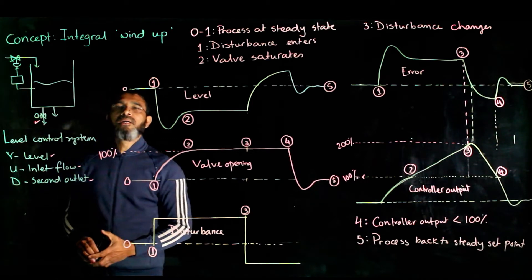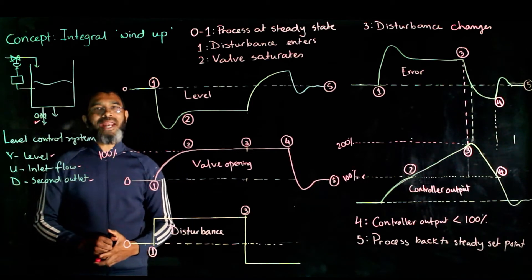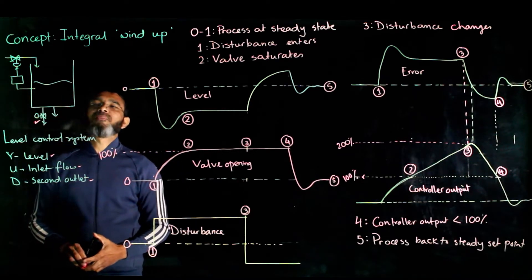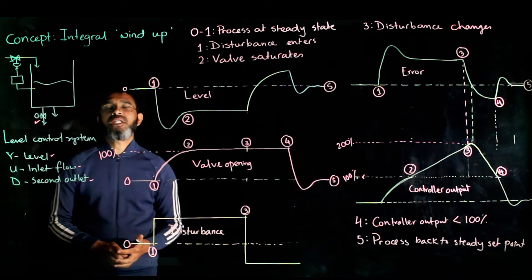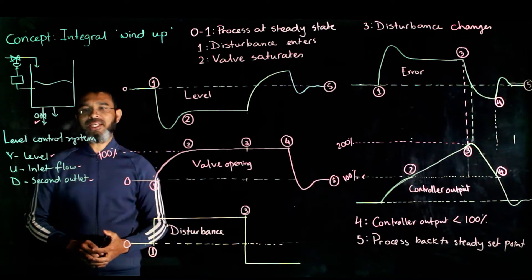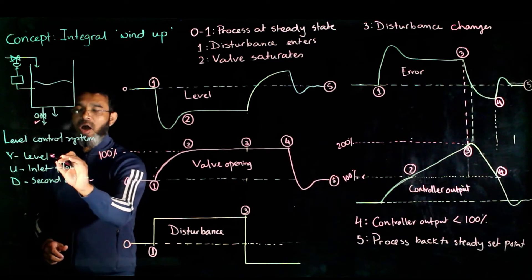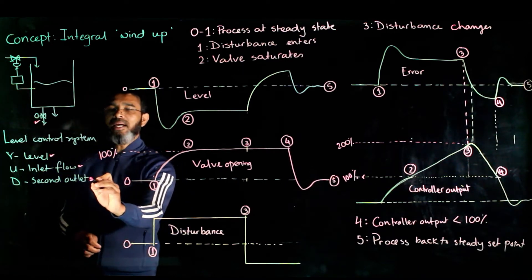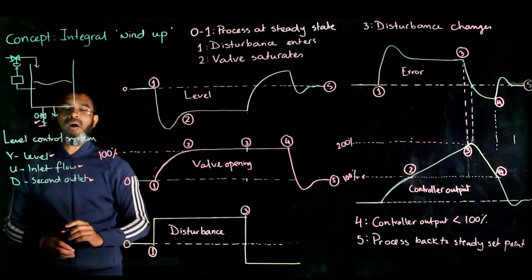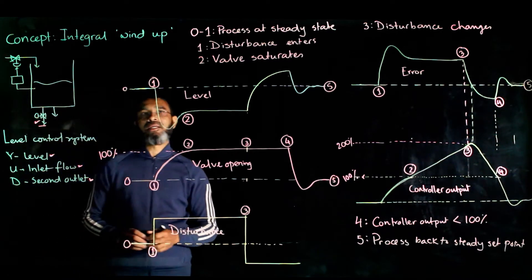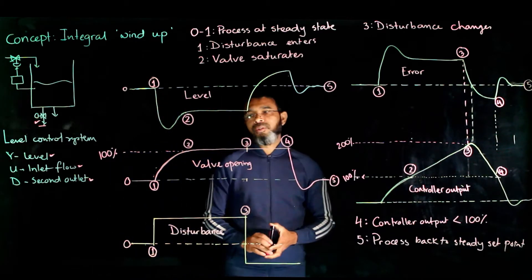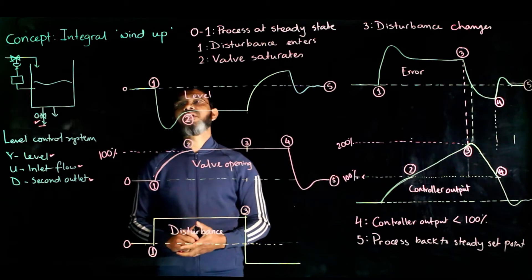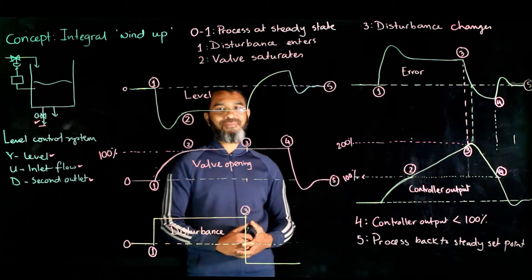In this session we talk about the integral windup issue. To understand the problem, let's take a look at a simple tank example where the objective is to maintain the level of liquid in the tank by manipulating the inlet flow. The output is the level, the input is the inlet flow, and the disturbance is a second outlet from the tank.